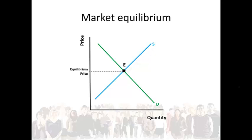When the price of the product is higher than the equilibrium price, for instance P1, the quantity supplied will be much larger than the quantity demanded, meaning there will be a market surplus.